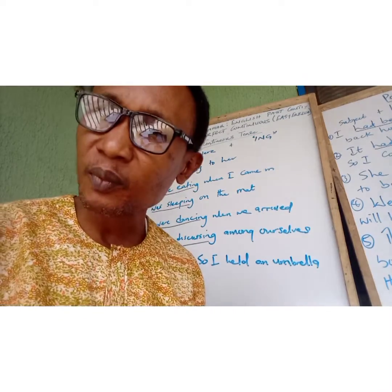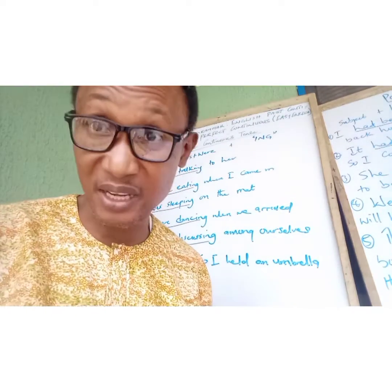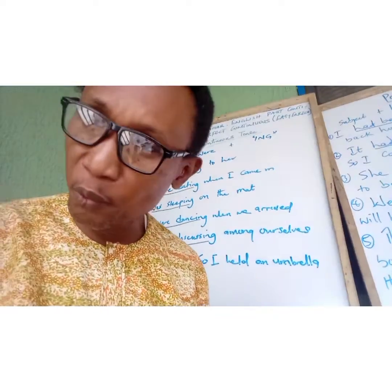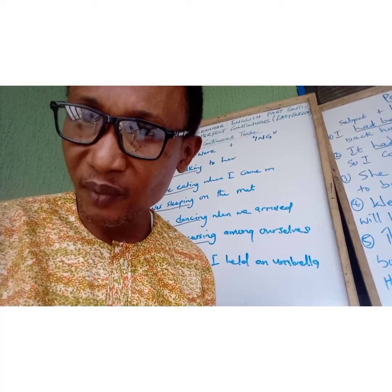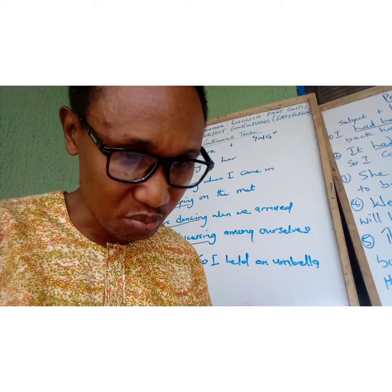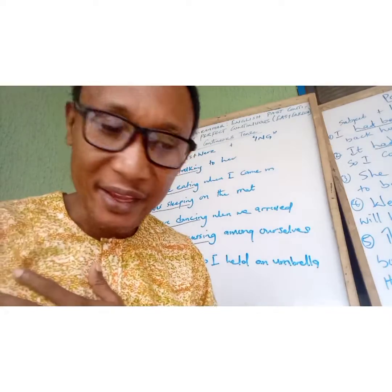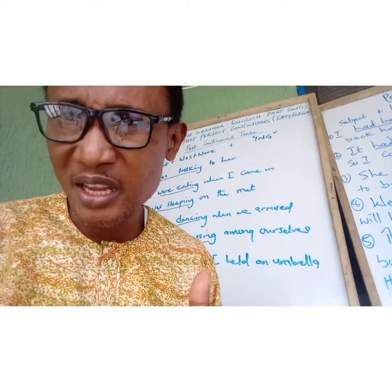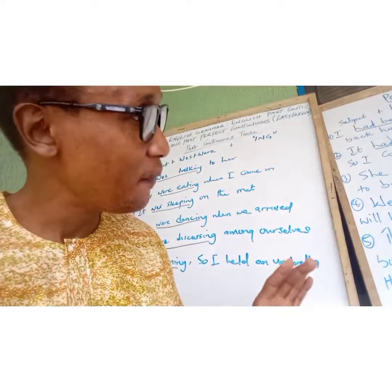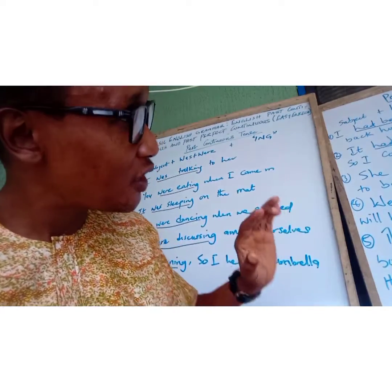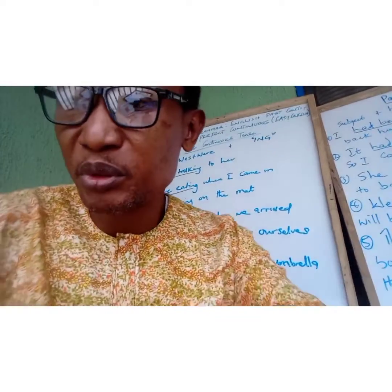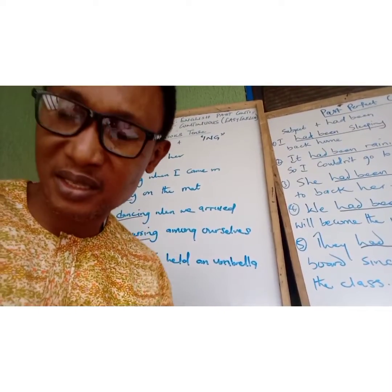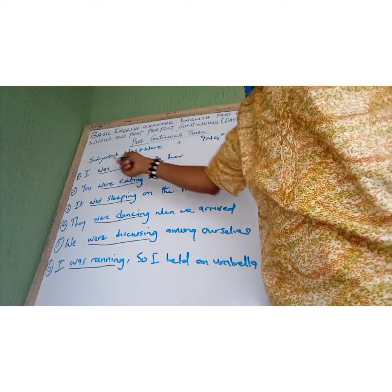On the other hand, when it comes to the past perfect progressive tense, 'had been' is used in addition to the '-ing' form. Explaining this verbally might come across as confusing, and that is why I titled this video 'Easy English' and have very simple explanations. Please come along while I take you to the whiteboard for a simple and explicit explanation of the past continuous tense and the past perfect tense.